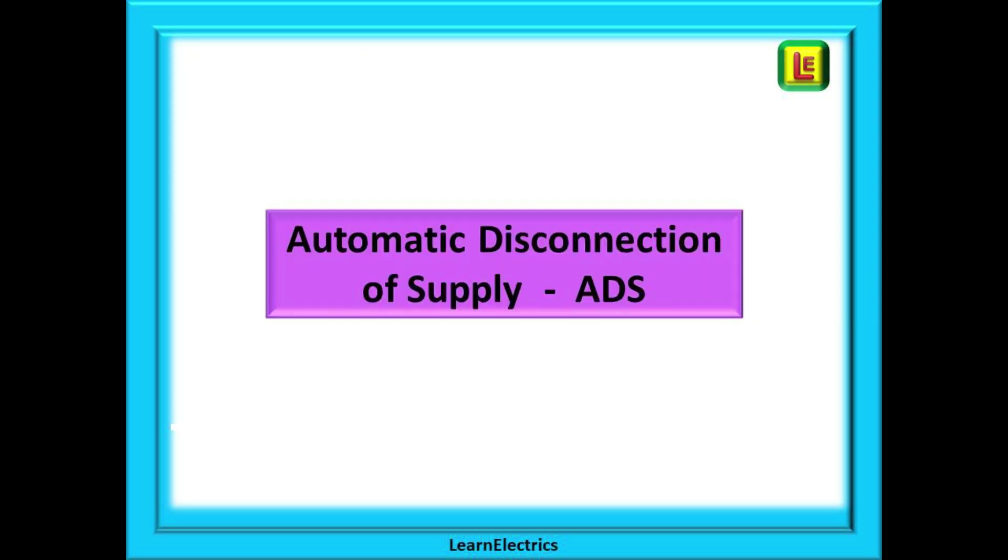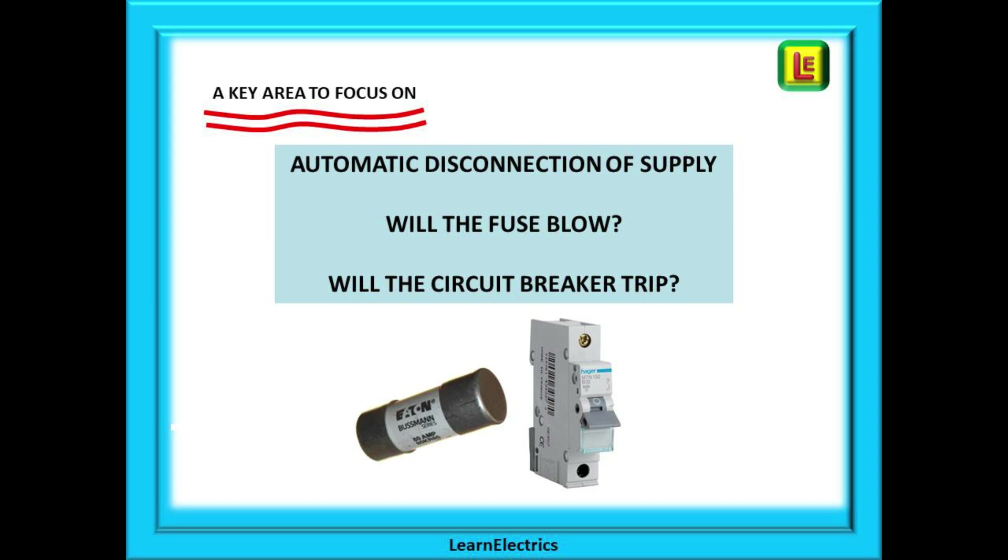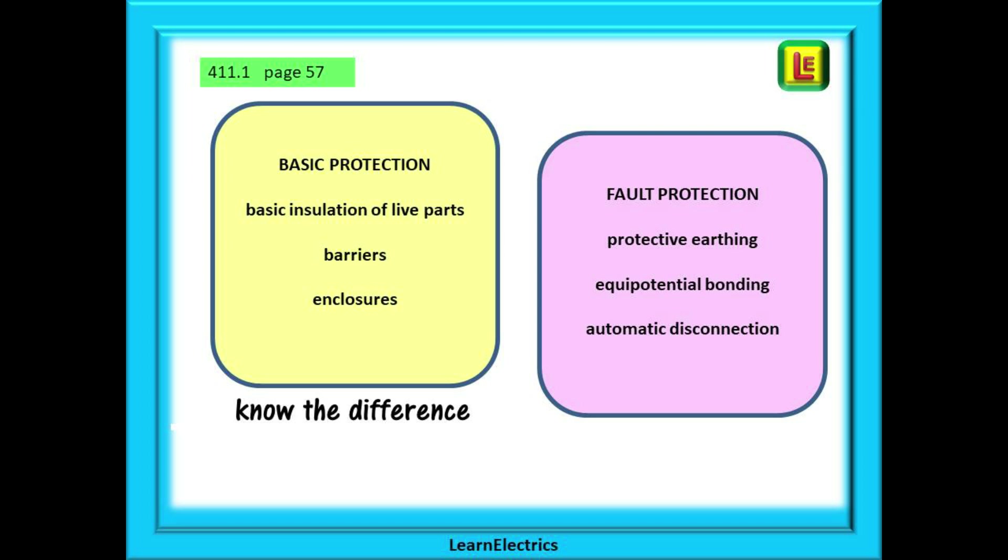The next section is about Automatic Disconnection of Supply, often abbreviated to ADS. This is a key area to focus on. All we want to know is: will the fuse blow or the breaker trip if there is a problem? Section 411 beginning on page 57 is about basic protection and fault protection. Basic protection is all about insulating live parts or putting them behind barriers and enclosures. Fault protection is to do with earthing, bonding, and making ADS work, and you must know the difference between basic and fault protection. Expect questions.